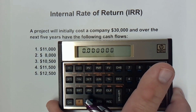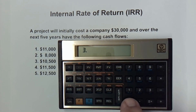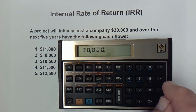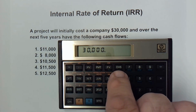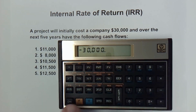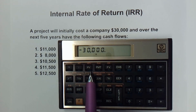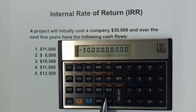Now we need to start entering the data. We have $30,000 as the initial investment. Because it is leaving the company — going into the investment and out of the bank account — we need to make it negative. So I'm going to hit CHS, which changes the sign, and then hit the blue G button because I want CF sub-zero. That's our initial cash flow going out.